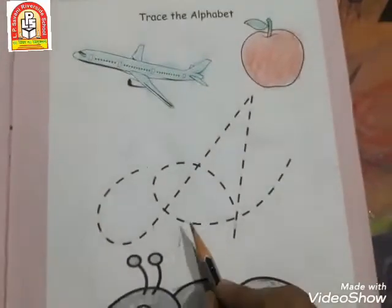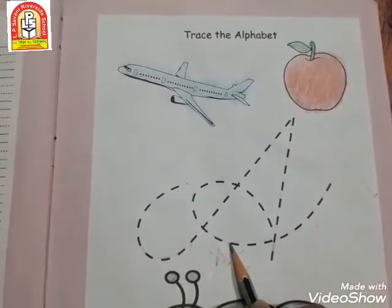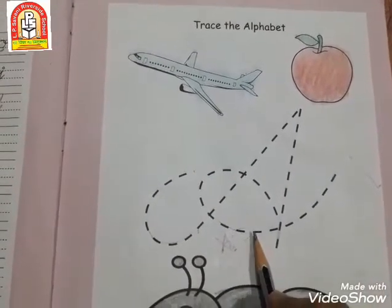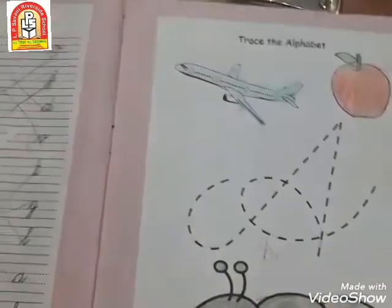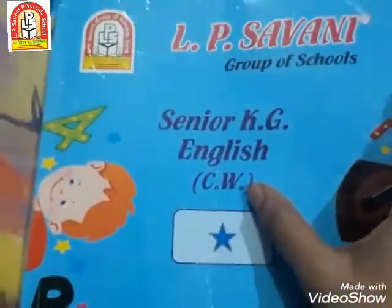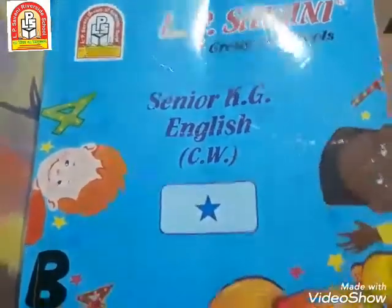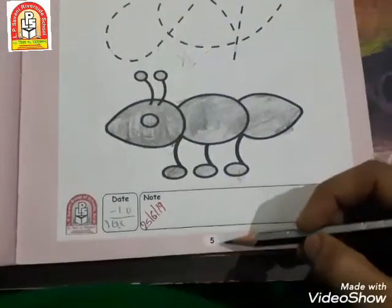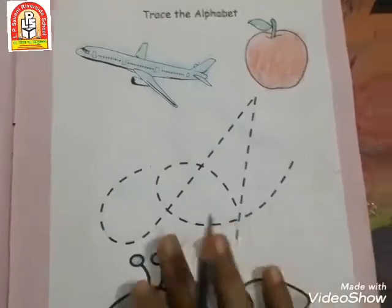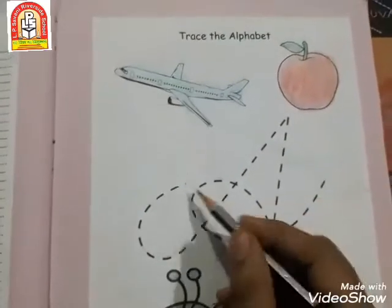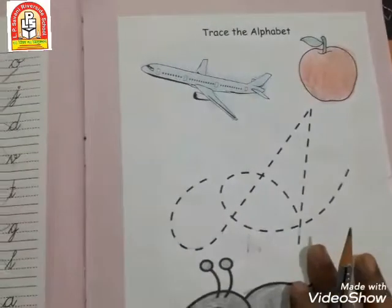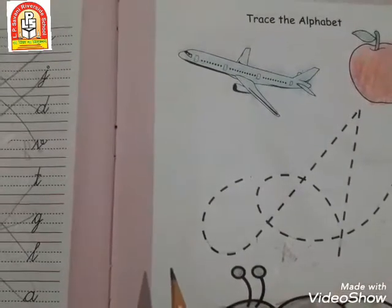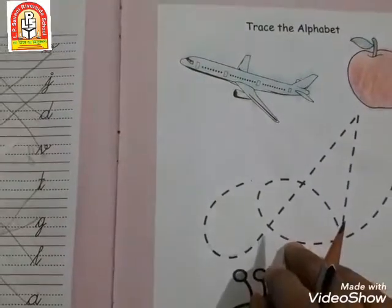Today our topic is capital cursive A — how to write capital cursive A. Everyone first of all take out your English CW book and open page number 5. Today we will write and trace capital cursive A. So are you ready students? Now we will start tracing capital cursive A.